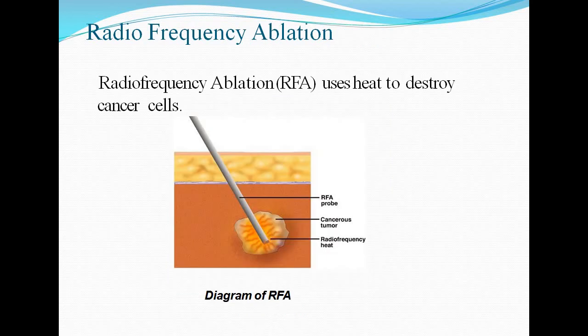Radio frequency ablation uses heat to destroy cancer cells. It uses a probe or electrode to apply an electric current to a tumor. The electrical current heats the cancer cell to high temperature which ablates the cells. The cancer cell dies and the area being treated gradually shrinks and becomes scar tissue.